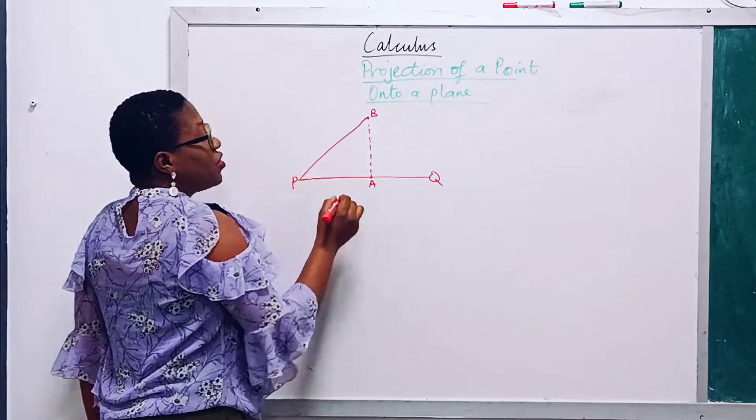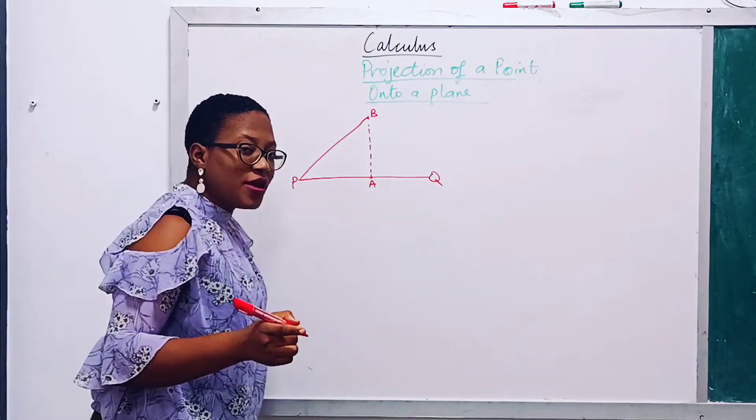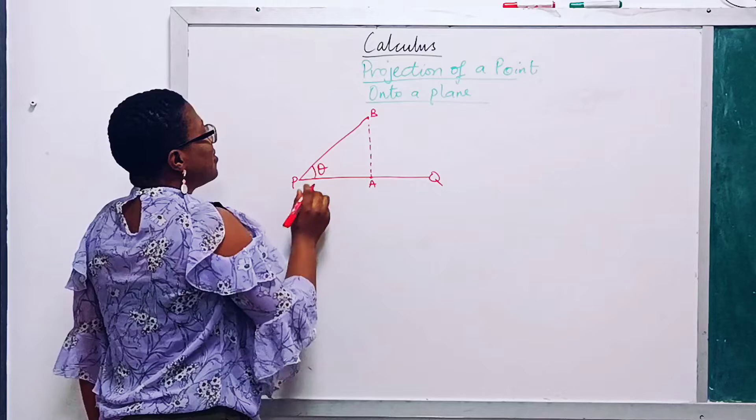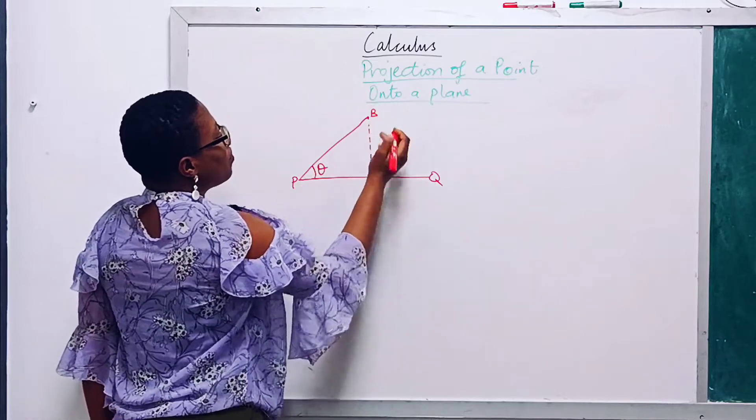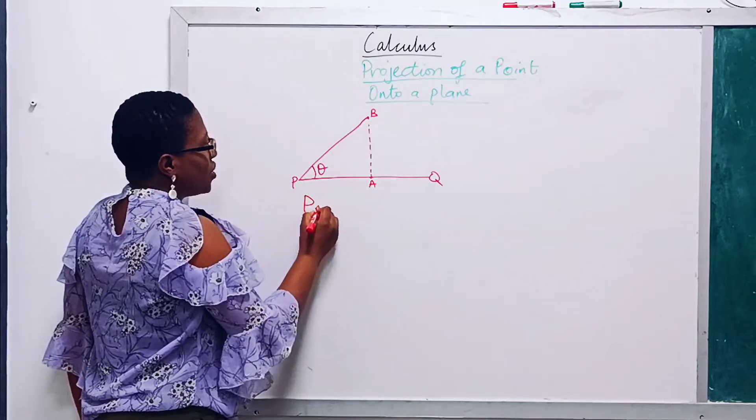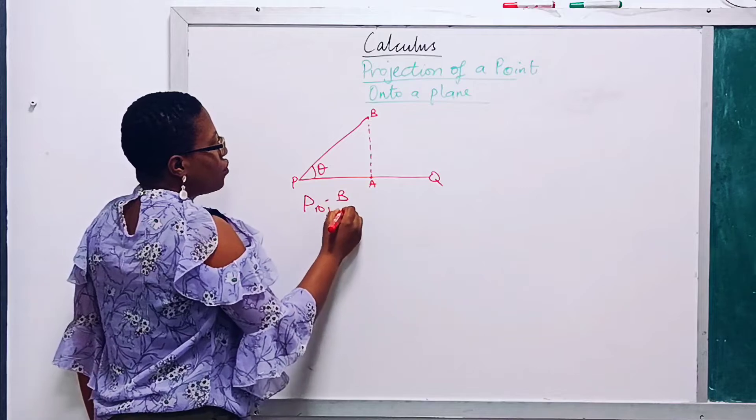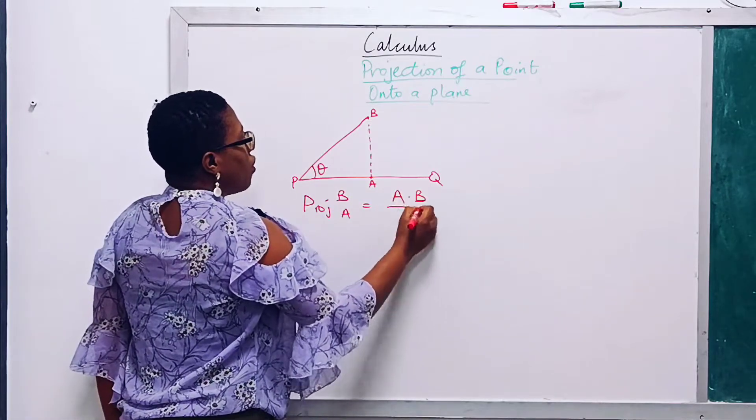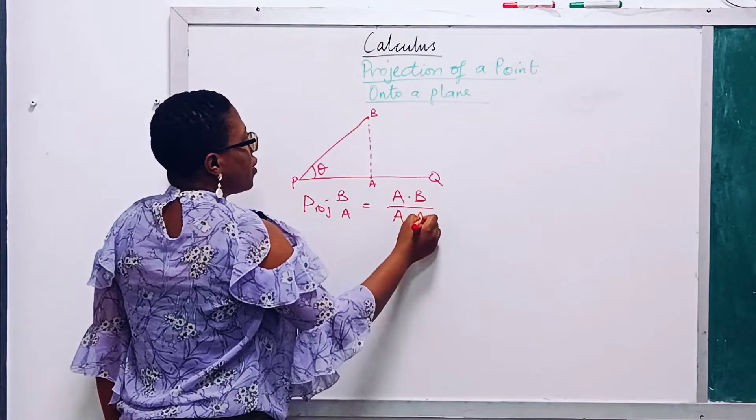Should we derive the formula of action right from this? This is theta. The projection of this point onto this, which we write as projection of G onto A, is equal to A dot G over A dot A plus A.